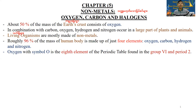Each element of the periodic table has its own period and group. Now we have to look at domain number 8 — atomic number 8, which is oxygen.